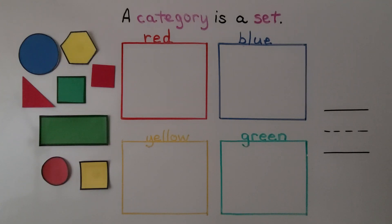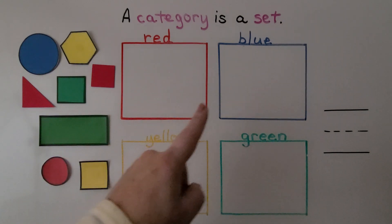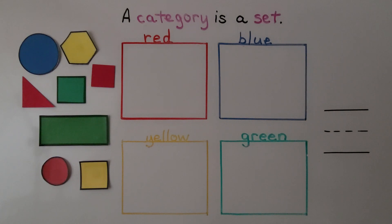A category is a group or a set. We can sort and classify these shapes into different categories by their color. Here we have four categories of color: red, blue, yellow, and green. We can put each shape into their correct color category — their correct color group, their correct color set.